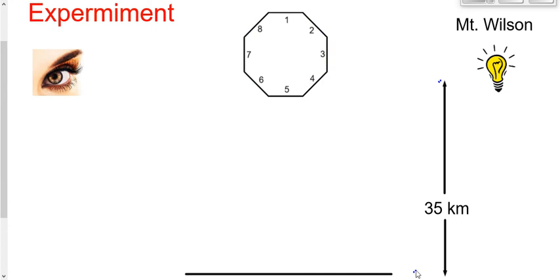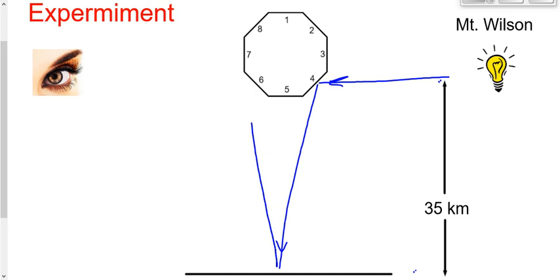If we shine a flash of light from this light bulb towards side four, it hits that mirror, reflects back down here, reflects back up here off of side six, and then reflects back here and gets observed by the observer. The observer sees the light. Now, at least we're starting to get this set up — the observer sees the light, that's what we want.